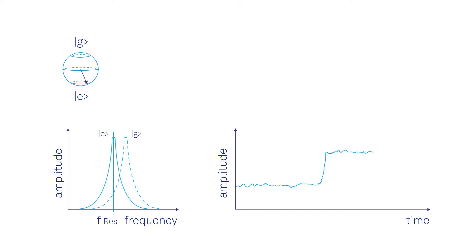To readout the state of a superconducting qubit, one needs to characterize the shift of a dispersively coupled microwave resonator. In this example, the transmission of a readout pulse is low when the qubit is in the ground state and high when it is in the excited state.